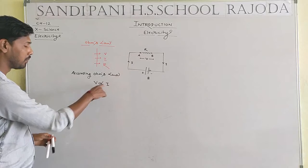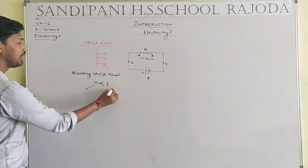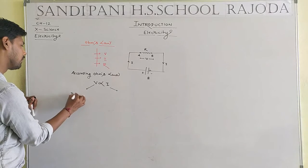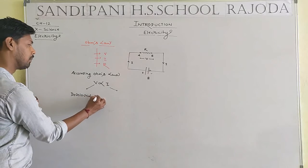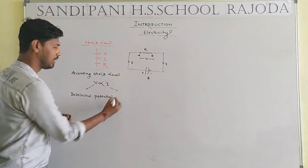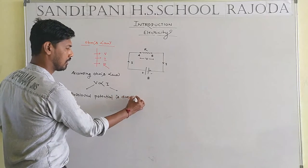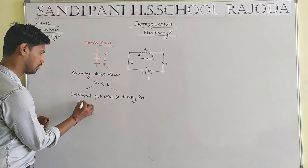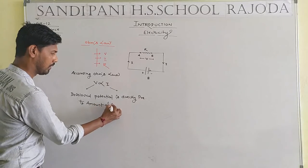According to Ohm's law, V is directly proportional to I — where V means potential and I means amount of current. So we can say developed potential is directly proportional to amount of current.